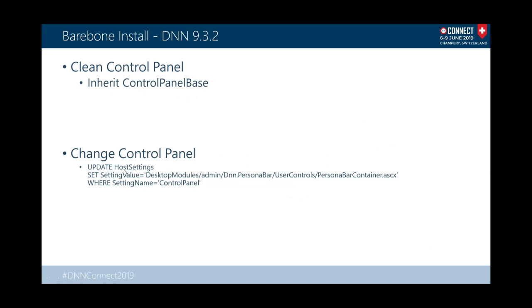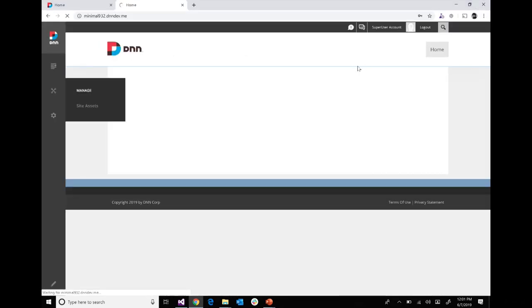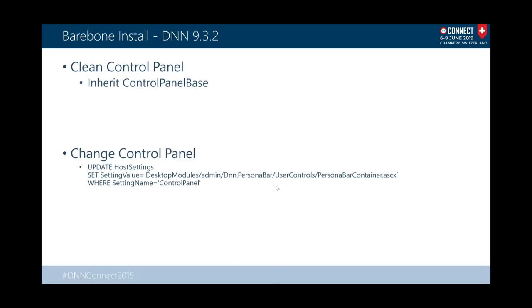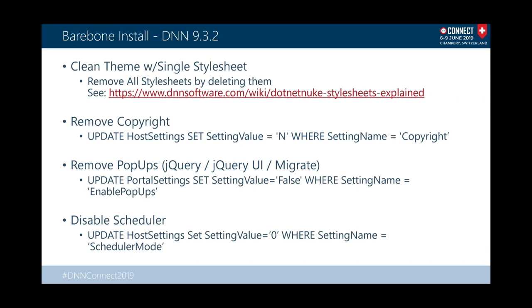This gets rid of all 50-60 JavaScript calls we had. Let me switch to the site I already set up. Also, we talked about cleaning the theme — you can get rid of all stylesheets just by deleting them. But more importantly, in the default DNN theme there are about a dozen skin objects for login and other functions, and each one loads its own JavaScript and CSS as needed. So I created a clean theme just to make a clean slate.